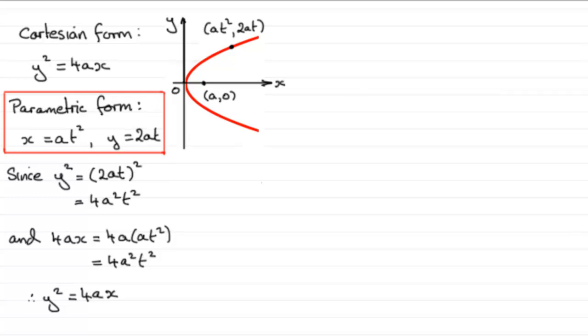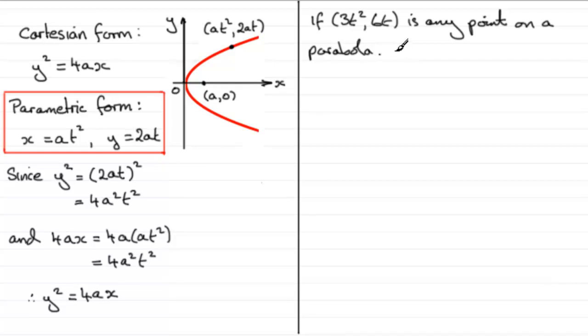Let's show you how we could use this. Suppose we had a point on a curve, let's say if (3t², 6t) was any point on a parabola. Our question then is to find the equation of the parabola. So how would I do that? Well, I'd write down first of all x equals 3t² and also y equals 6t.